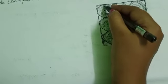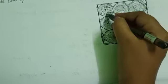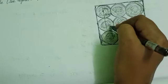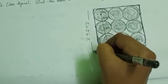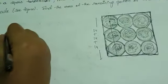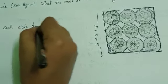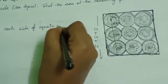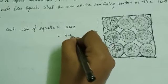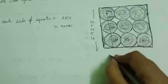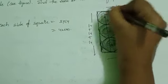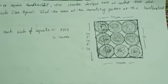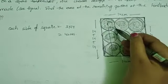Here we have nine circles, each with radius 7 cm. So diameter = 7 + 7 = 14 cm. The circles are arranged 3 across and 3 down, so each side of the square = 3 × 14 = 42 cm. In a square all sides are equal, so each side equals 42 cm. We need to find the area of the remaining portion.